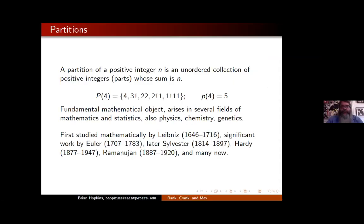Because partitions are not the everyday topic of this seminar, I'm going to start from not the beginning, but a beginning. A partition of a positive integer n is an unordered collection of positive integers whose sum is n. There I've given you all the partitions of four, and there are five of them. We'll use little p for the number of partitions. Lots of applications — it's a basic area of mathematics. First studied by Leibniz, then Euler did a lot, then Sylvester at the beginning of American mathematics, and then Hardy and Ramanujan, and now many people do this kind of work.